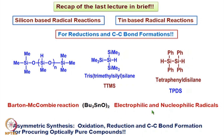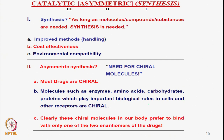Then we looked at the reactivity of various kinds of electrophilic and nucleophilic radicals and compared how they could be utilized in different ways. Now we will look at asymmetric synthesis, where we will be taking examples from oxidation, reduction, and C-C bond formation to procure optically pure compounds. Catalytic asymmetric synthesis is eventually the final goal.